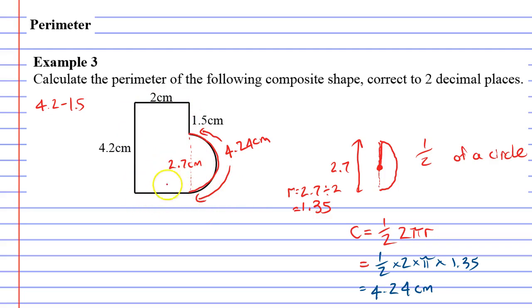What about this bottom piece? Well, this bottom piece matches up with the 2 above, so this has got to be 2 cm, which means that we've got all the information we need. Perimeter will be 2 plus 1.5, we're just adding all the sides together, plus 4.24, plus 2, plus 4.2.